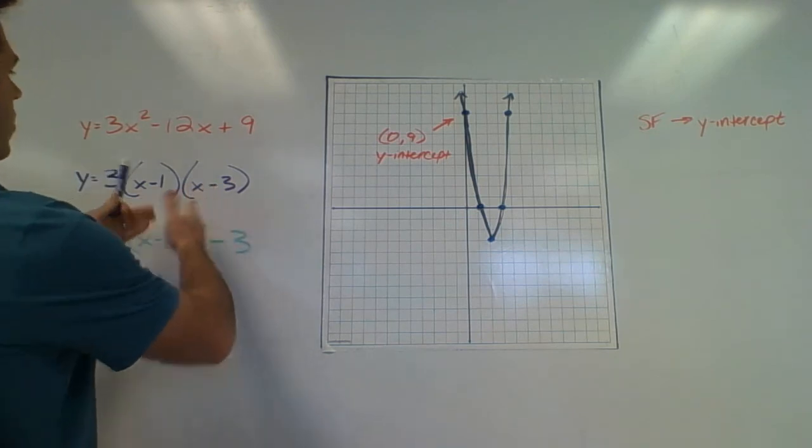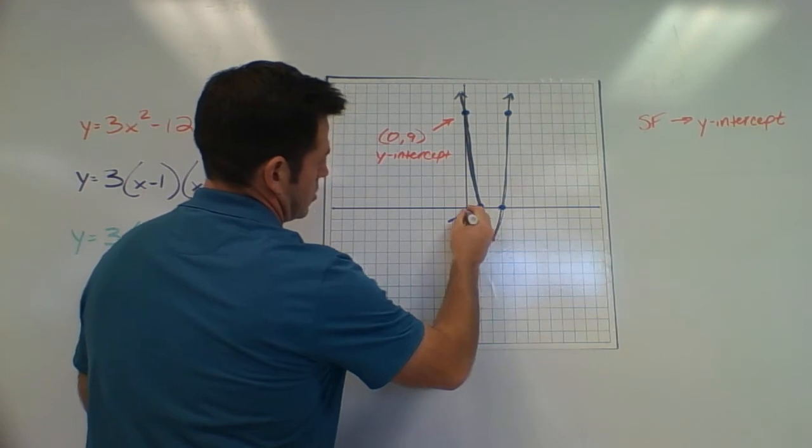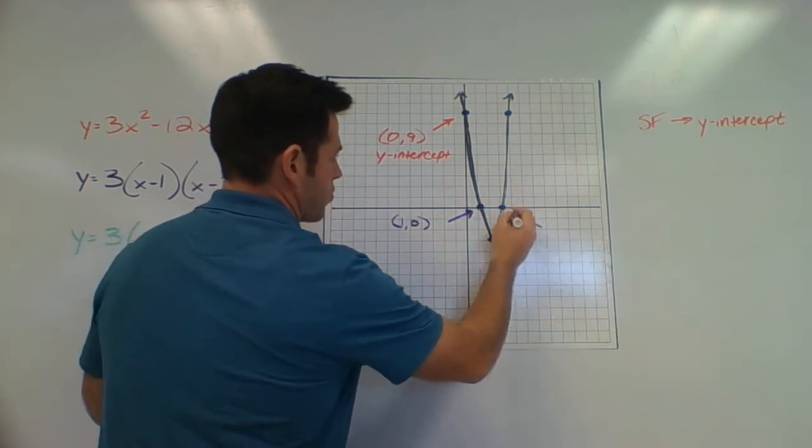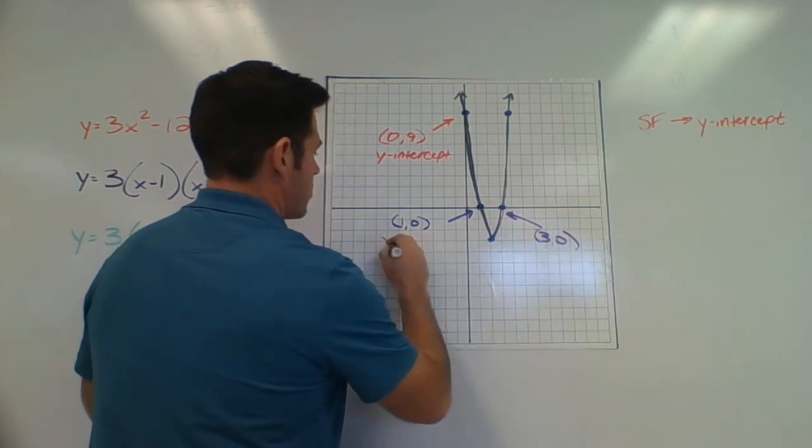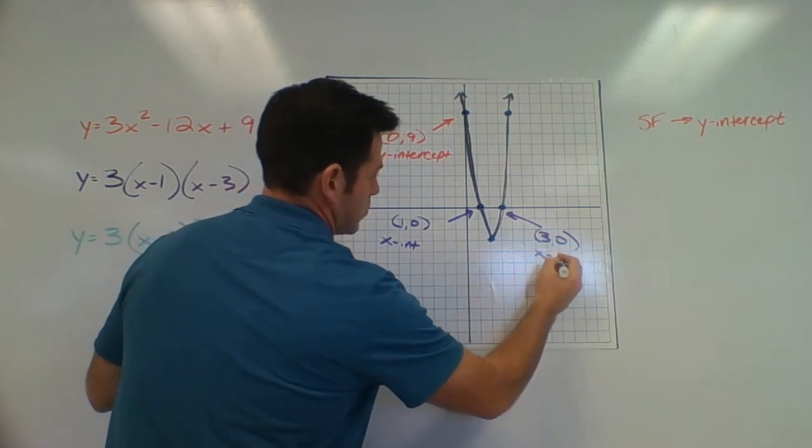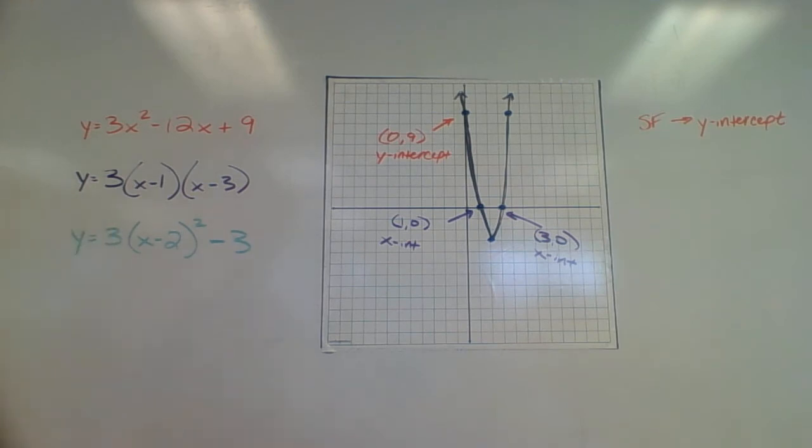So I have x minus 1, x minus 3 inside the parentheses. There's 1 comma 0. There's 3 comma 0. And that gives us our x-intercept. Now we might not necessarily always be given 2 of them, but we've seen that a lot, especially when it's in intercept form.